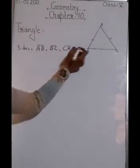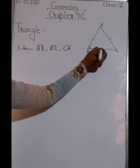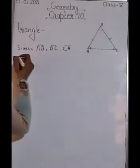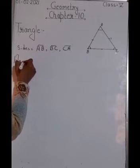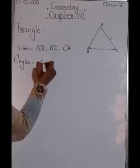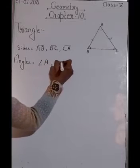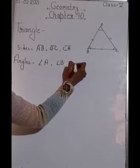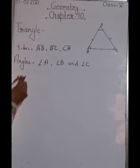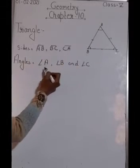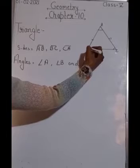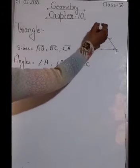A triangle has three sides as well as three angles: angle 1, 2, and 3. The names of these angles are angle A, angle B, and angle C. These corners are also known as vertices.